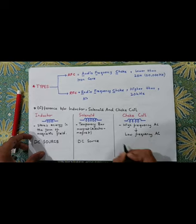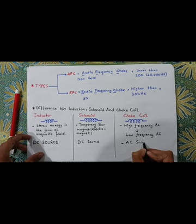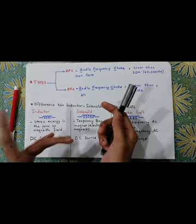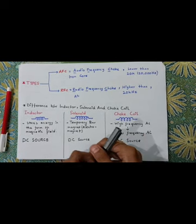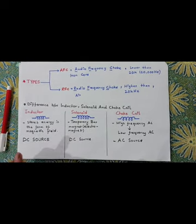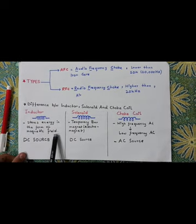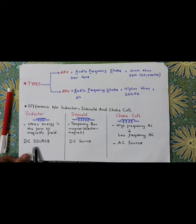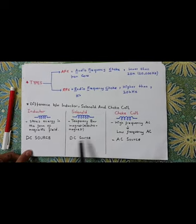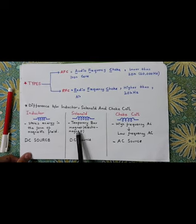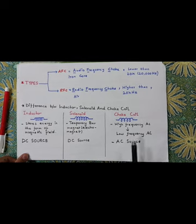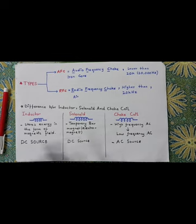Since we mentioned AC for the choke coil, its source is an AC source. If we take an inductor or wounded coil such that its resistance is zero, inductance is maximum, and it stores rather than dissipates power, and connect it with AC, it will work like a choke coil and convert high frequency to low frequency. To revise: an inductor is a wounded coil that stores energy in the form of a magnetic field when connected to a DC source. A solenoid, when connected to a DC source, acts as a temporary bar magnet — an electromagnet. And a choke coil is a wounded coil that, when connected to an AC source, converts high frequency AC current into low frequency AC current.